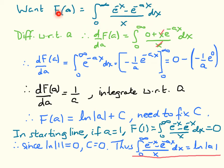We need to fix the integration constant by looking at our initial formula and considering a particular value of a. If a equals 1, then we have e^(−x) minus e^(−x) in the numerator, which is 0. So f(1) would be the integral of 0 over x, which is 0. Coming back to our result, when a is 1, f(1) must vanish. That gives us log(1) plus the constant equals 0, so log(1) is 0, and therefore the integration constant is 0.